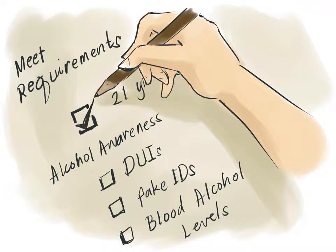Meet the requirements. You must be at least 18 years old to work as a bartender, though some states require that you be 19 or 21. Some states also require that bartenders take alcohol awareness classes prior to beginning work. Alcohol awareness classes cover DUIs, fake IDs, blood alcohol levels, serving alcohol to minors, preventing intoxication, and other related issues.